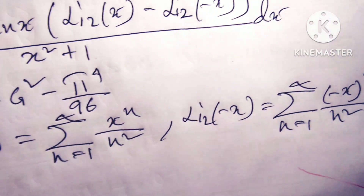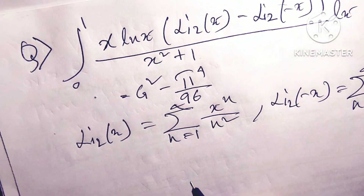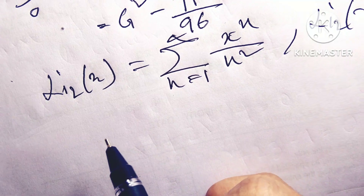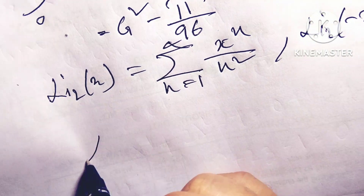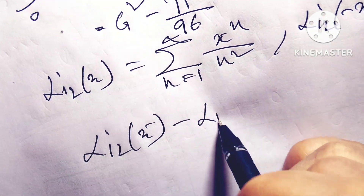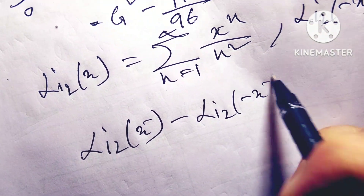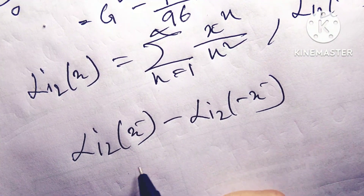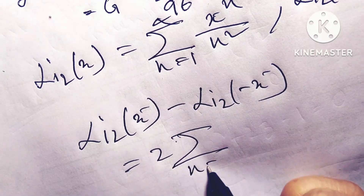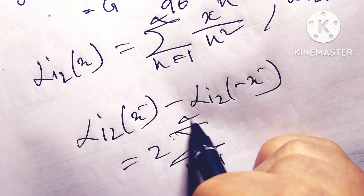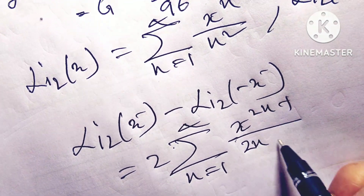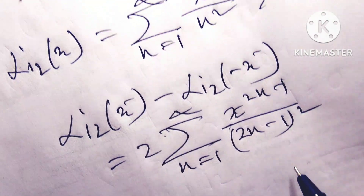So friends, we see that Li₂(x) minus Li₂(-x) equals 2 times the summation n=1 to infinity of x^(2n-1) / (2n-1)².